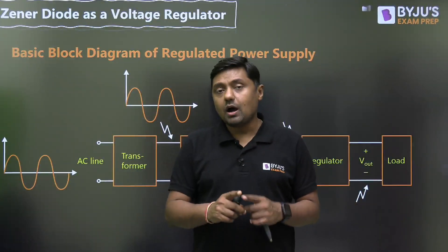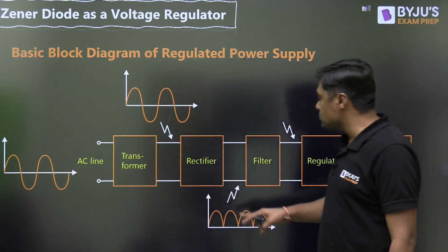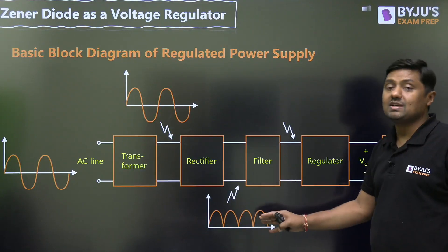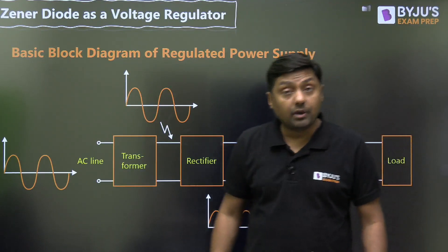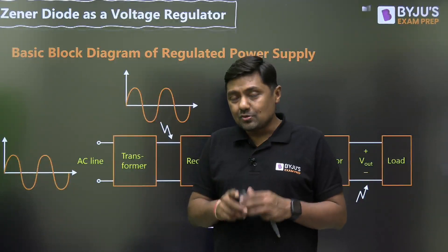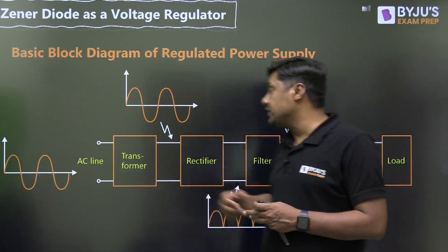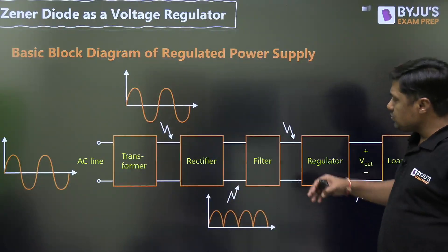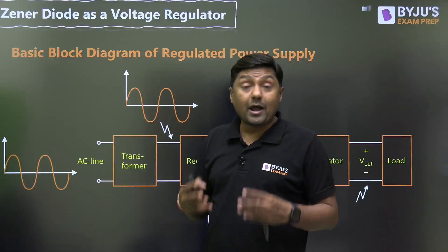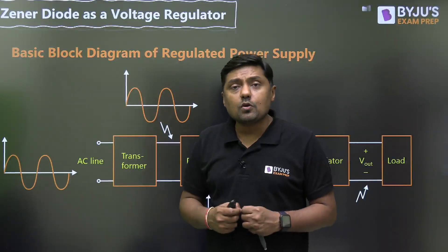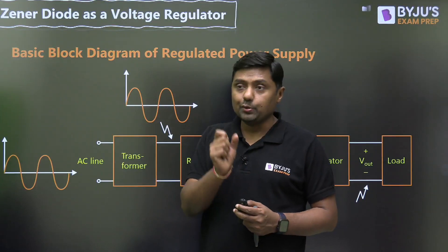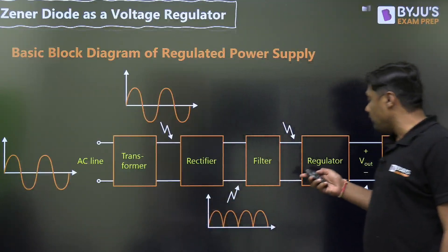After rectification it is not pure DC — it has a DC component but also an AC component called ripple. This signal is called pulsating DC. This signal is then passed through a filter circuit — capacitor filter, inductor filter, L-section filter, or pi filter. The purpose of the filter is to minimize the AC component and reduce the ripple.